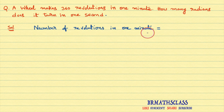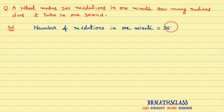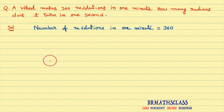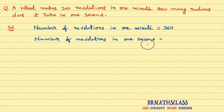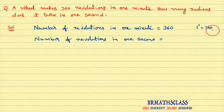Number of revolutions in one minute: the wheel makes 360 revolutions in one minute. So number of revolutions in one minute is already given as 360. Now we will try to find how many revolutions that wheel makes in one second. Here, this notation is for one minute, and in one minute they have given 360 revolutions.